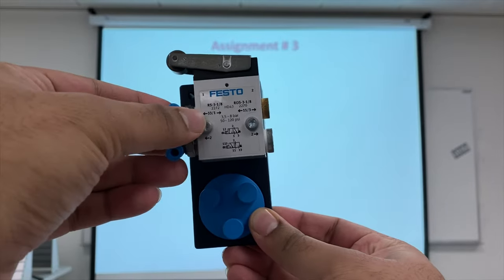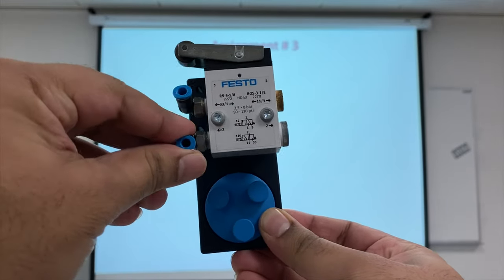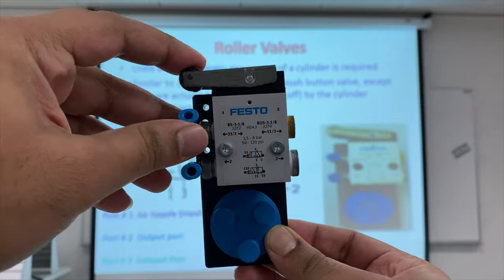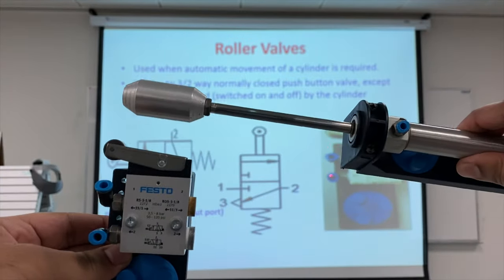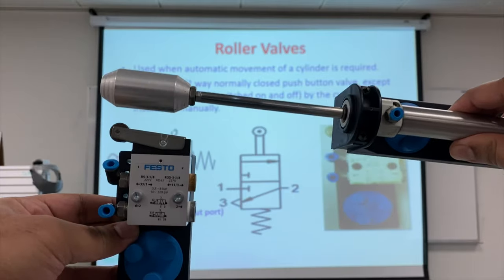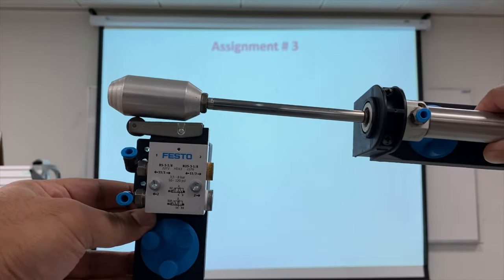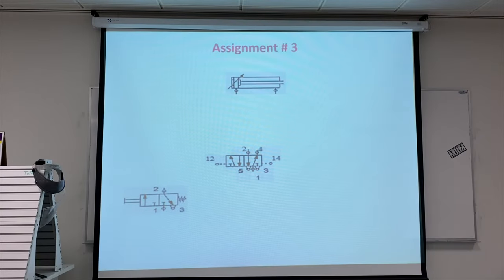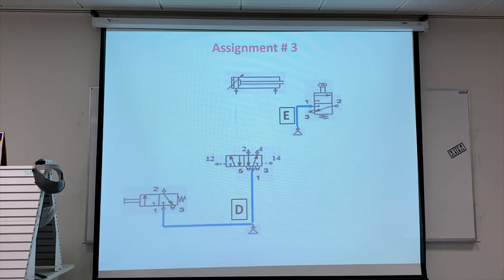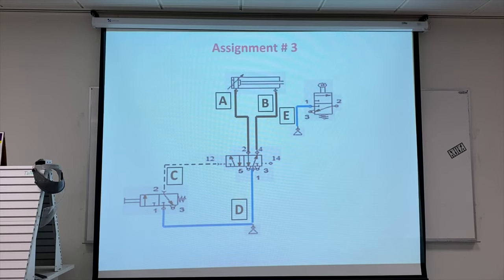This is the real roller valve. Port 1 is where the air supply is connected, this is the output, and this is the roller. This is used with a cylinder — when the cylinder extends, it touches the roller which activates port 2. So the cylinder and roller valve have to work in conjunction together.